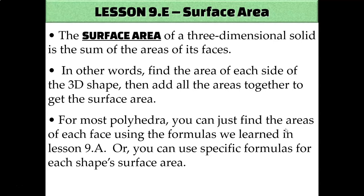Not everything is as easy as a cube, because not all the faces of every three-dimensional solid will be a nice simple square. In those situations, you'll need to add up whatever the areas of each of those faces are. You can do that in two different ways: you can use the area formulas from lesson 9a to take it piece by piece and add up each face individually, or there are also specific formulas for each three-dimensional solid that will get you to the answer as well.